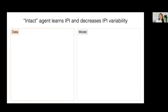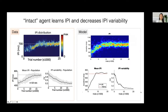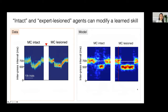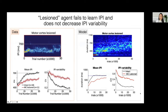Our agent successfully captures the behavior we want — all data on the left, all simulations on the right. The agent captures the learning trajectory of animals, successfully learning the IPI and decreasing timing variability over learning. When we change the criterion from 700 to 500 milliseconds and back to 700, both simulated intact and lesioned animals can effectively adapt, just like the real animals. In contrast, naive lesioned agents — where the belief state updating process is fixed before learning — are not able to learn the IPI, and their IPI variability remains quite high in red compared to intact agents.